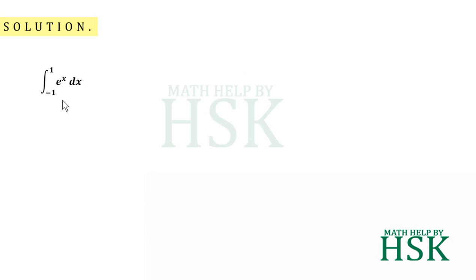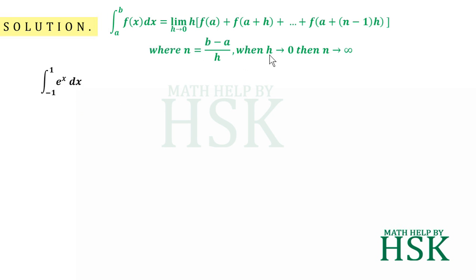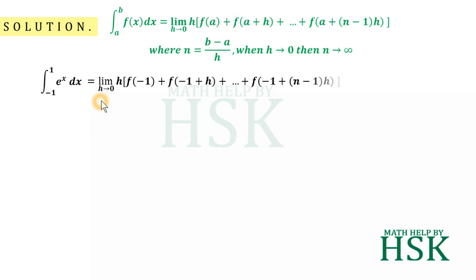Now to solve this question, first of all I take the given integral and apply this formula — that is integration as the limit of the sum. Because the lower limit is minus 1, I am going to place in this formula A is equal to minus 1, and obtain the expression: limit of h tends to 0, h times f of minus 1 plus f of minus 1 plus h, and so on up to f of minus 1 plus n minus 1 into h.